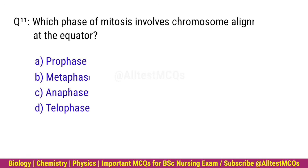Q11. Which phase of mitosis involves chromosome alignment at the equator? Correct option is B. Metaphase.